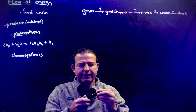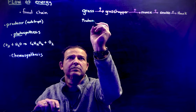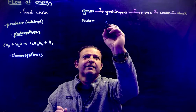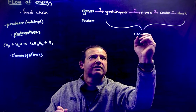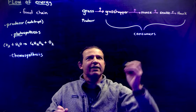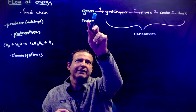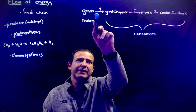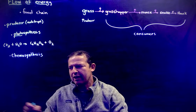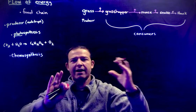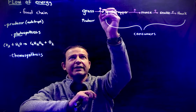Here is the one producer, and then all of these are consumers. Consumers can't make their own energy so they have to consume other things to get it. The arrows represent that flow of energy, and between each step there is an arrow going up, because about 90% of the energy is lost through the biological processes of digestion and trying to catch the food.